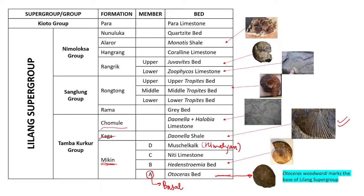The Tamba Kurkur group is overlaid by the Sanglung group. The Sanglung group has two formations: the Rama formation and the Rongtong formation. The Rama formation has grey beds, while the Rongtong formation is divided into lower, middle, and upper members on the basis of one marker ammonoid — the Tropites — giving the lower, middle, and upper Tropites beds.